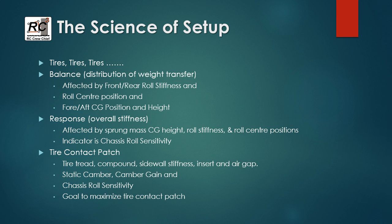The other thing that affects your setup is what I call response, or the overall stiffness — how stiff the car is. This is affected by the sprung mass CG height, the roll stiffness, roll center positions, and an indicator called the chassis roll sensitivity. Generally, you want a soft setup for off-road conditions because you've got to handle all kinds of bumps, landing off jumps and all that. And you want a stiffer chassis setup for on-road applications.